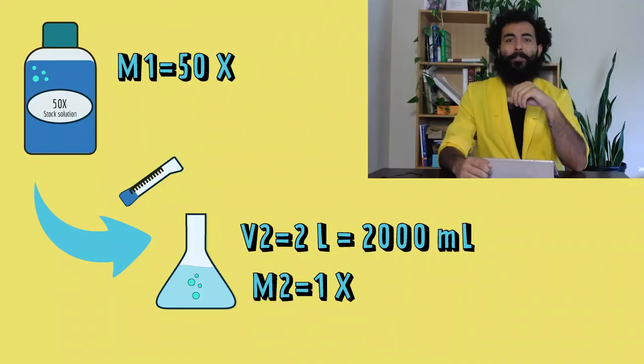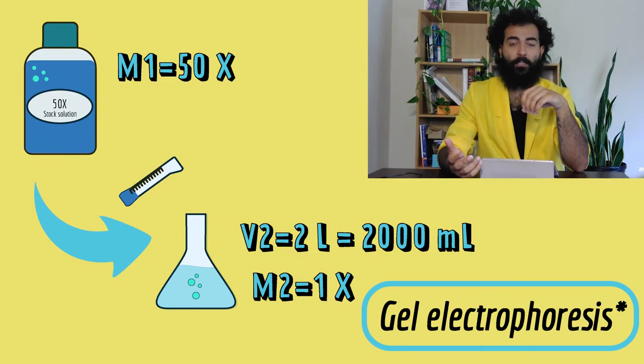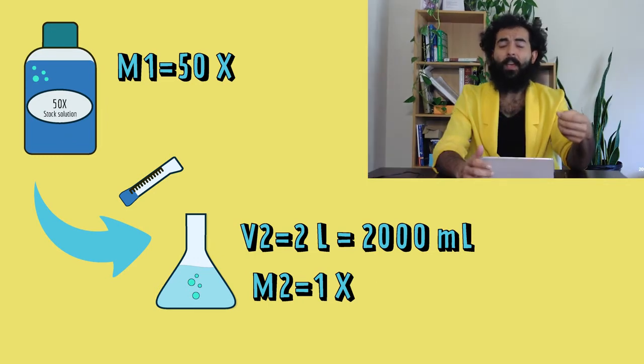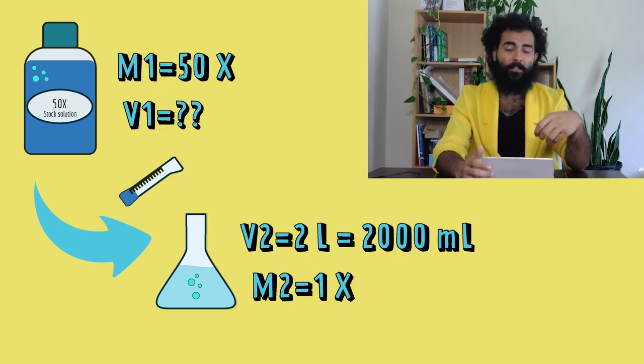If we need a buffer for gel electrolysis, we always use a 1x buffer. But it will be impractical to keep 20 liters or so much of it. So, we use a concentrated solution, our stock solution, and then dilute it to our desired solution, or working solution. And our equation can help us here too. So, let's say I need 2 liters of a 1x buffer for gel electrolysis, but my stock solution is 50x. How much of the stock solution do I need to dilute to get to my desired concentration?